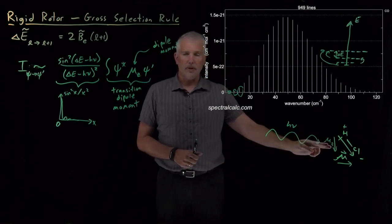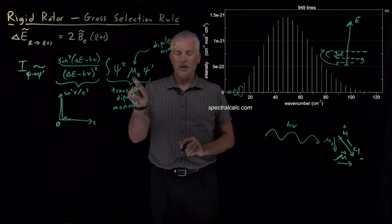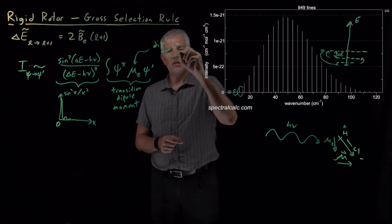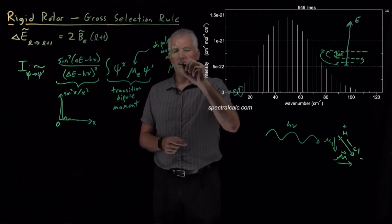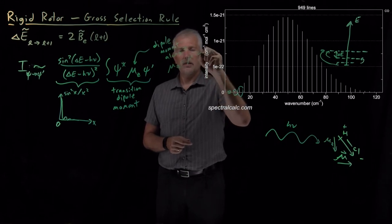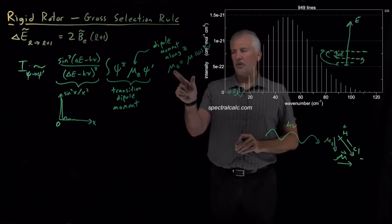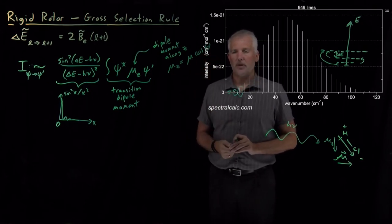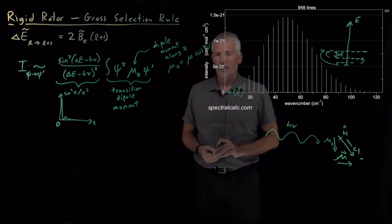It's the piece of the dipole moment that is in the same direction as the light. So all we need to know for right now is in our spherical coordinate system, mu sub z is equal to mu times the cosine of the angle theta.